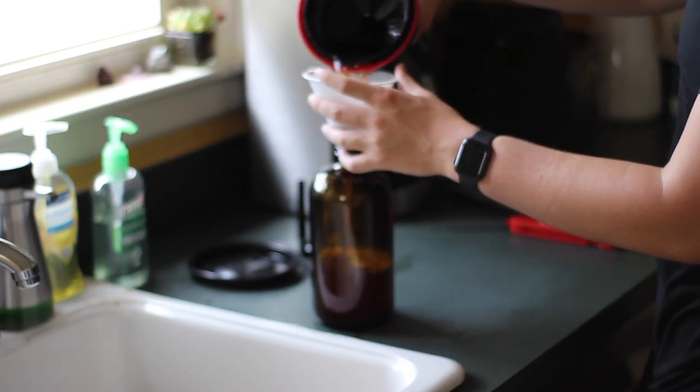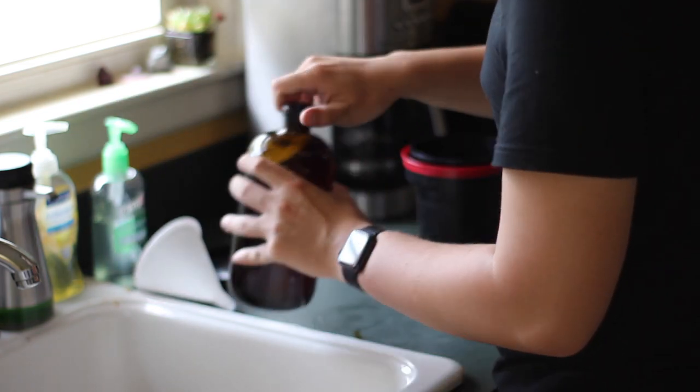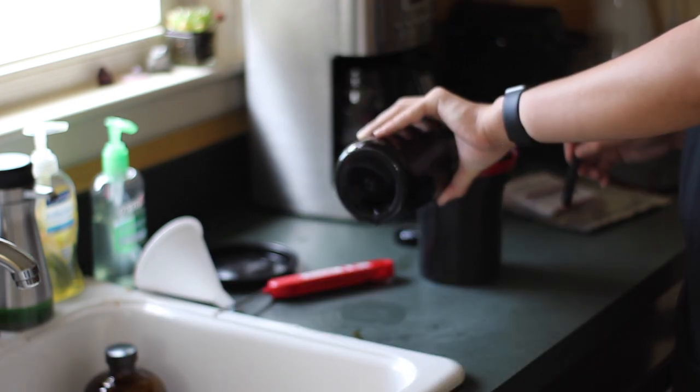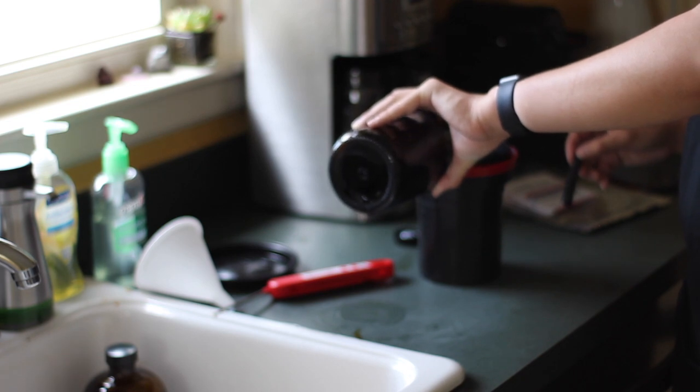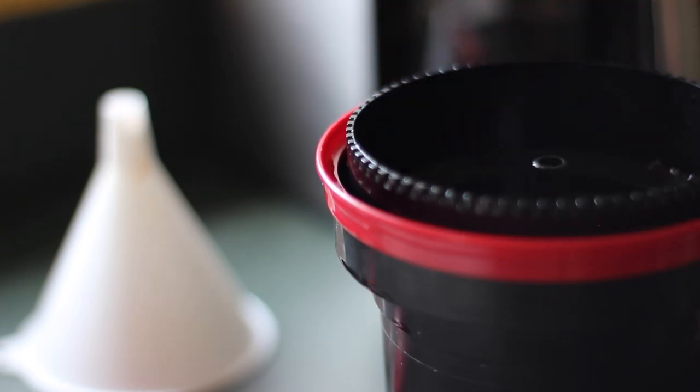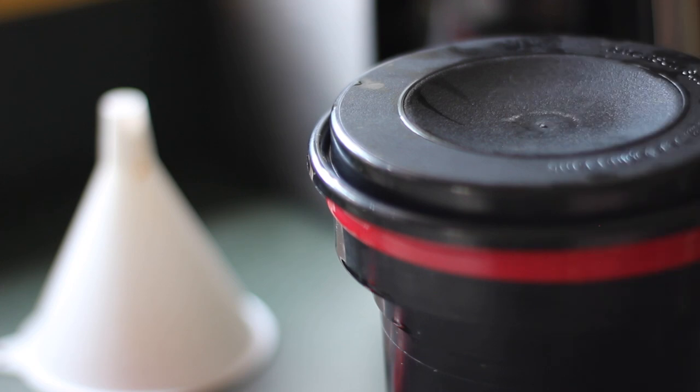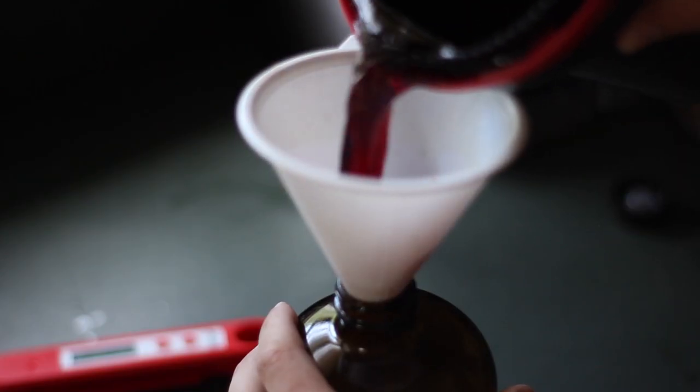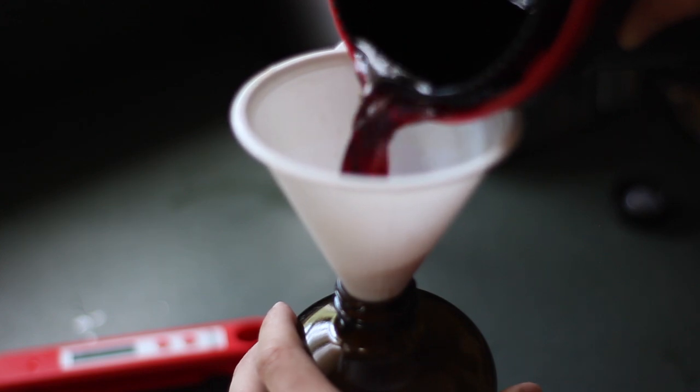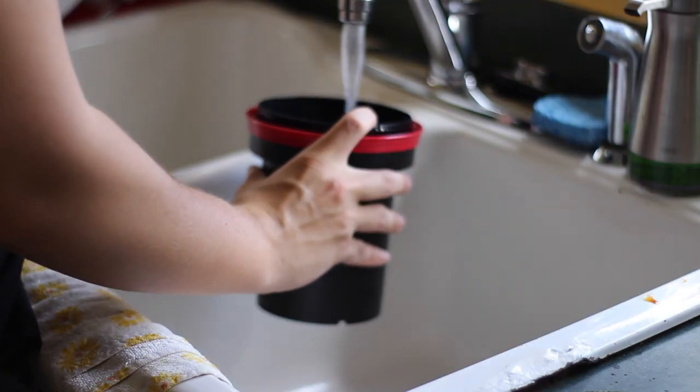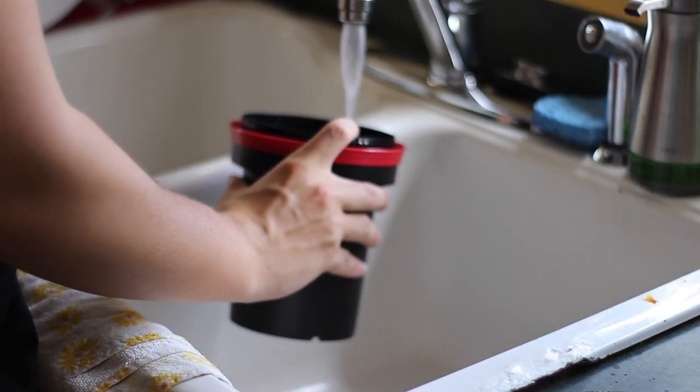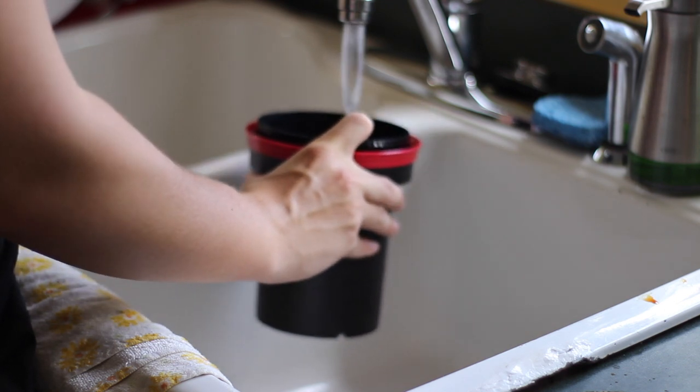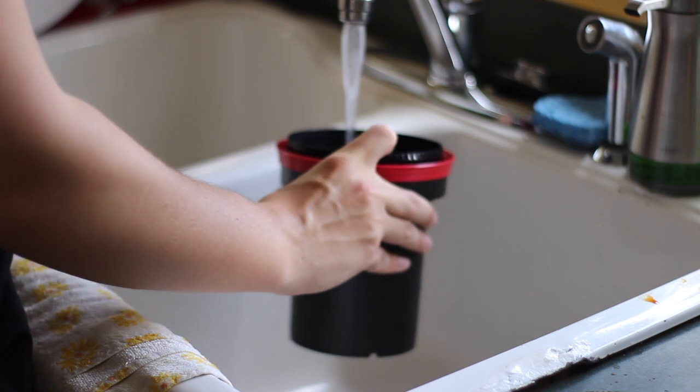Once you're done developing for three and a half minutes, put that back into the bottle. Then start the same process with the blix. Pour the blix into the development tank for about eight minutes. Once you've completed the blix, pour that back into the bottle, and at this point you can rinse it off. Run water through the tank just a couple of times.